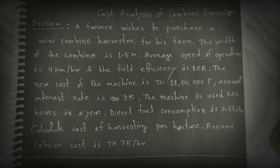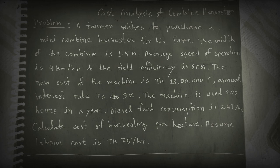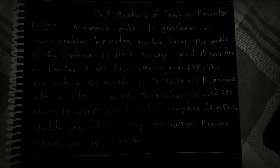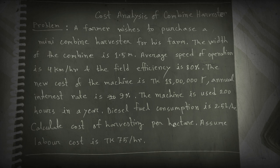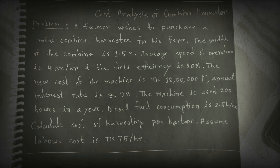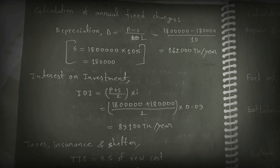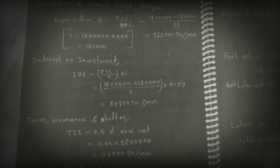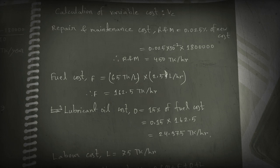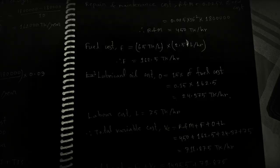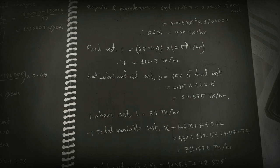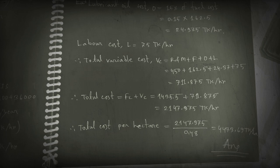Hello everyone. Today's video we will discuss cost analysis of a combine harvester and solve a problem. There are two types of cost: fixed cost and variable cost. Fixed cost includes depreciation cost, interest on investment cost, and taxes, insurance and shelter cost. Variable cost includes repair and maintenance cost, fuel cost, lubricant oil cost, and labor cost. By calculating all these values we can get the total cost of a combine harvester.